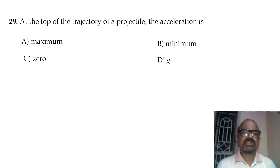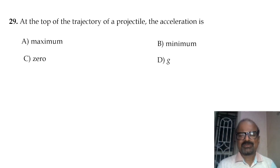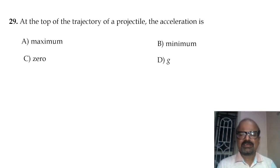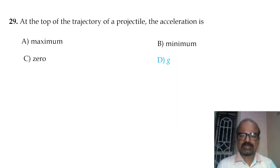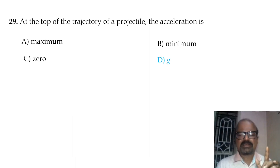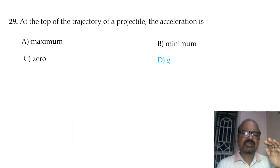At the top of the trajectory of a projectile, the vertical motion acceleration — acceleration due to gravity — continuously acts on the body. The acceleration due to gravity is a constant value; it is not minimum or zero.